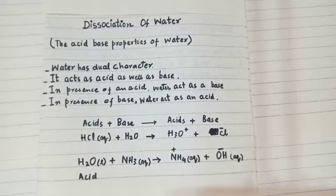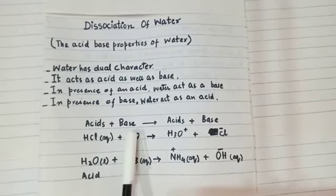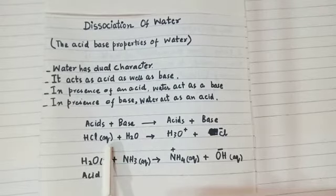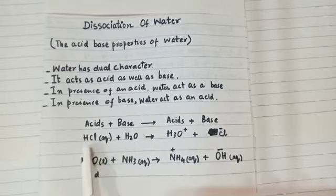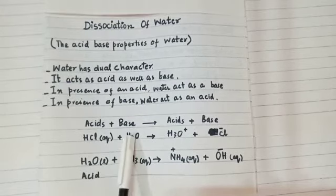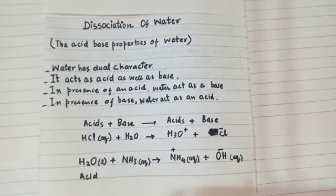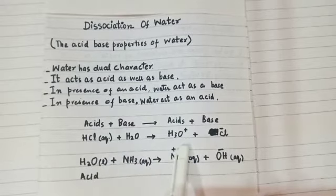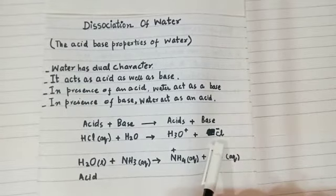Now see the chemical equation: acid reacts with a base. HCl, which is acid, when it reacts with water - because HCl is hydrochloric acid - water here will be a base. So here the hydronium ion forms, H3O positive, and chloride ion.